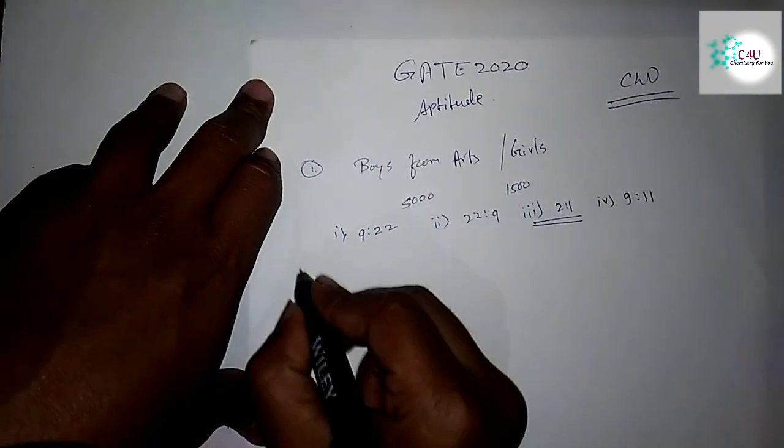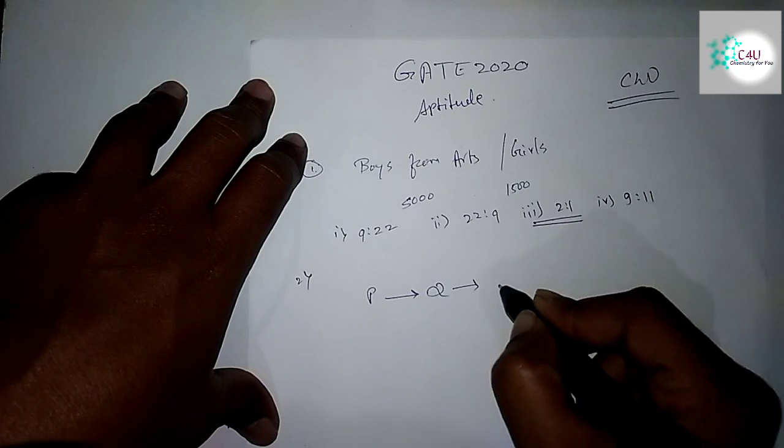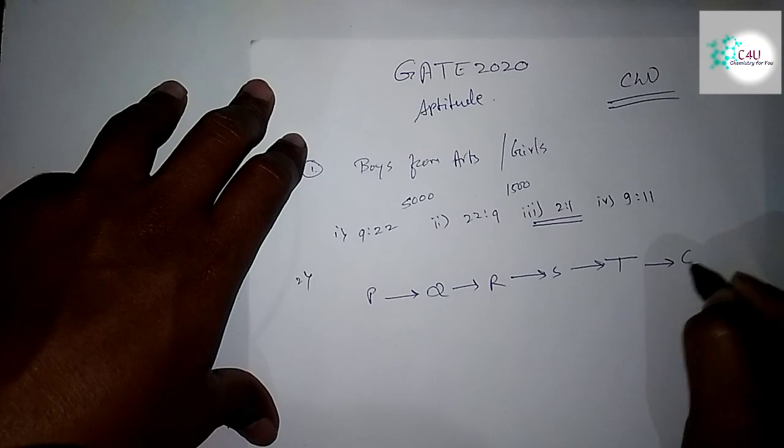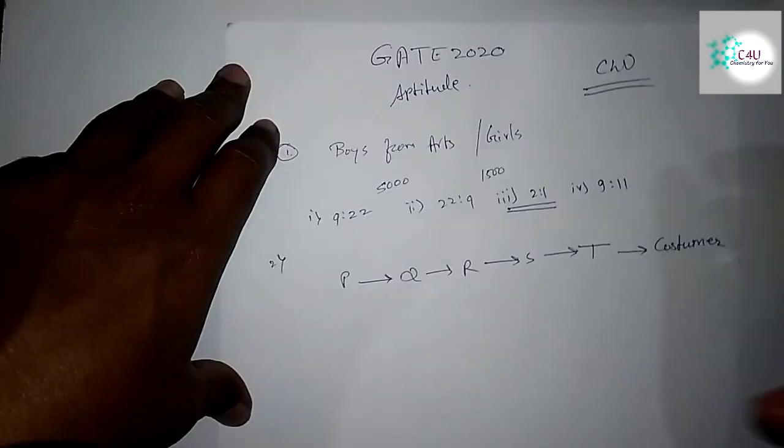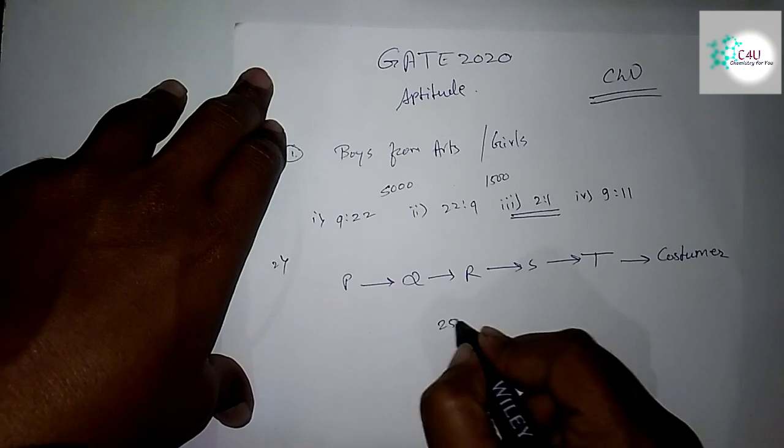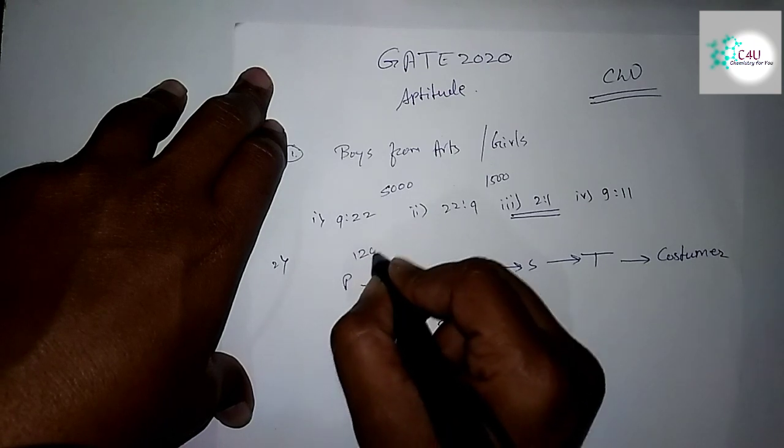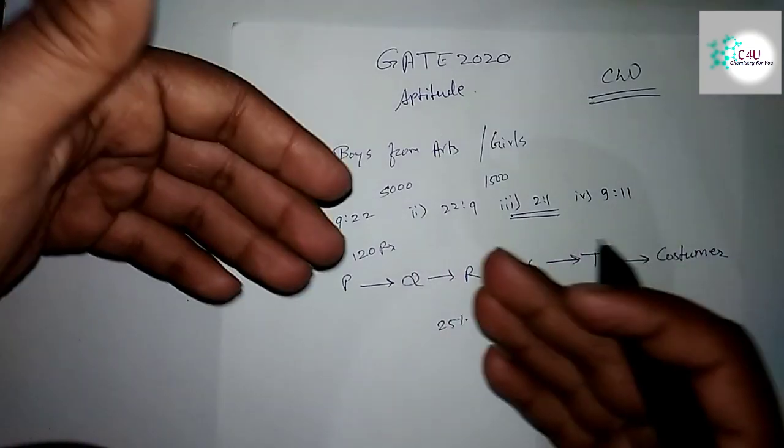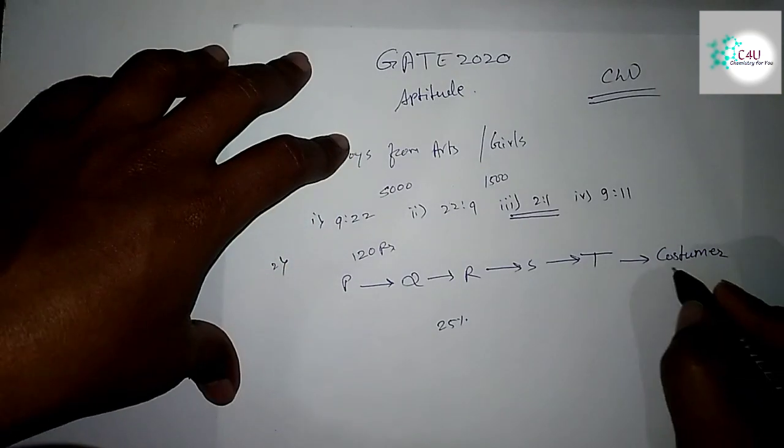The next question had a system of one product like P-Q-R-S-T to the customer. There was one system with five levels, and in each level the price increase was 25%. They gave you the price at level P: rupees 120. It was asked what amount the customer would have to pay for that product.